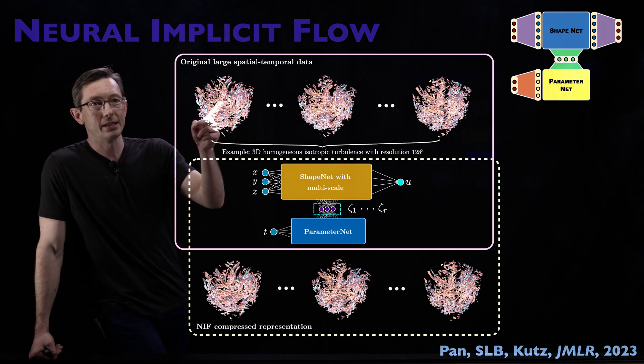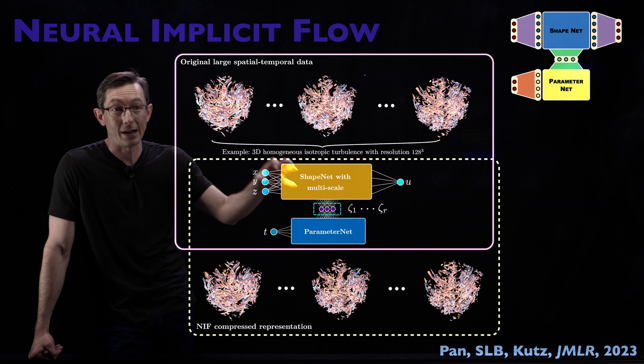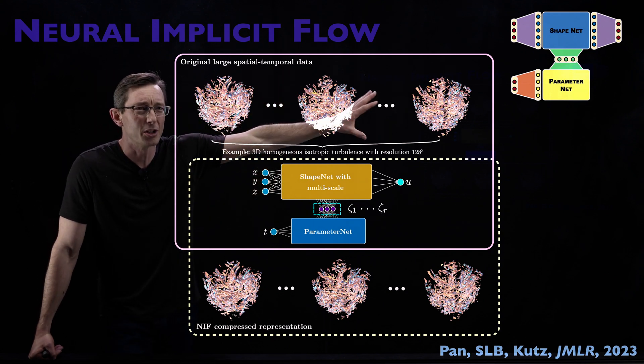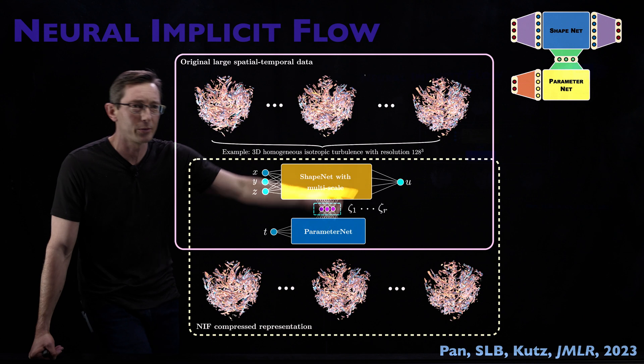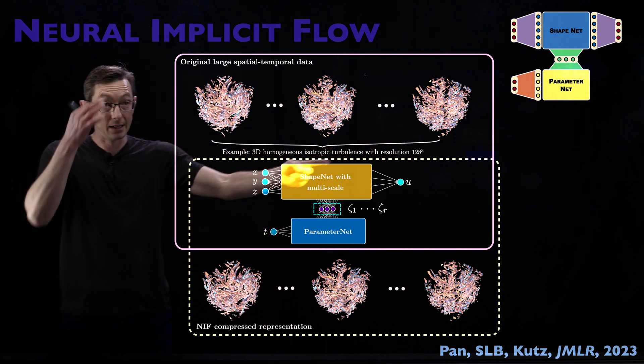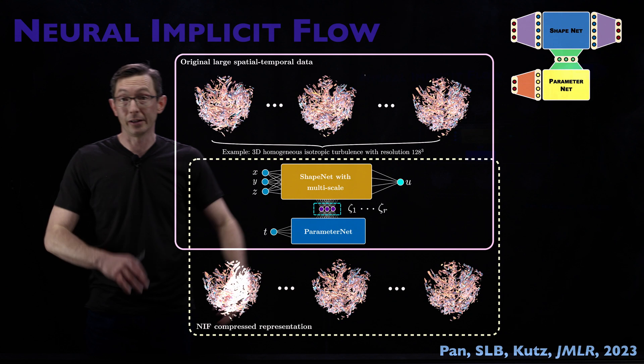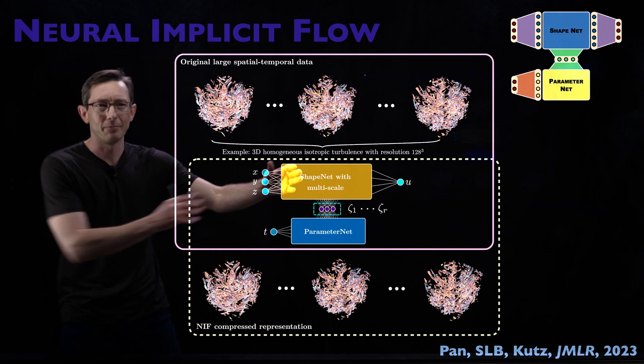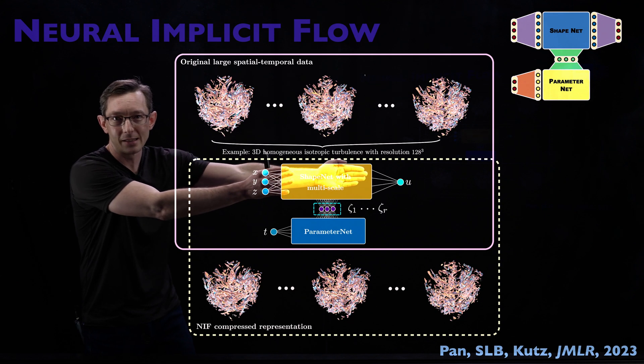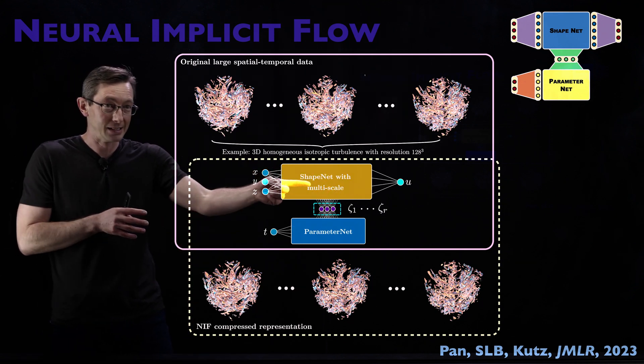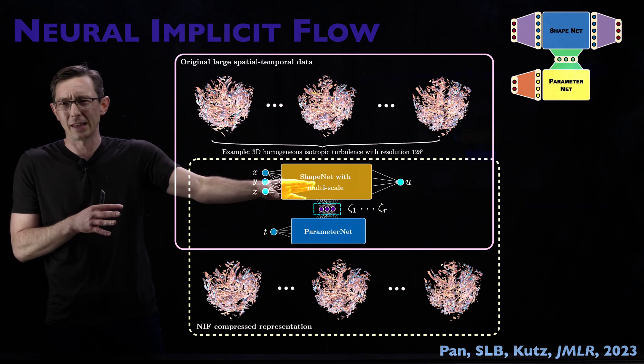And I actually really like this example. This is used for compressing really, really big turbulent data. These are huge isotropic turbulence data sets with resolution 128 cubed. So a movie of this thing is actually going to be very, very large. And with this Shape Net, with a multi-scale Shape Net, now we are representing this as just a rectangle, but you know that under the hood, there's a lot of stuff happening in this Shape Net and I'll show you what that looks like later.